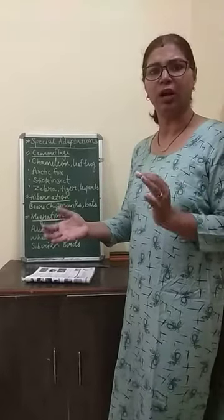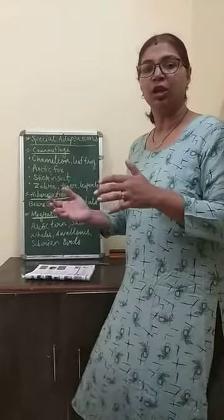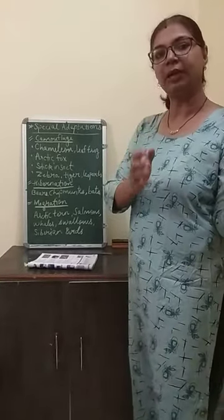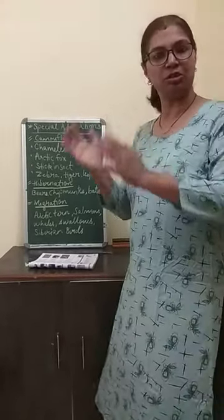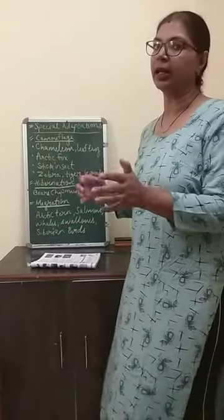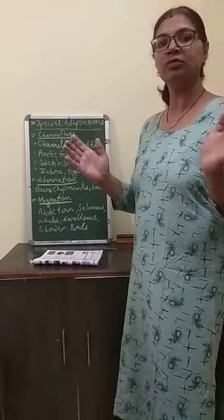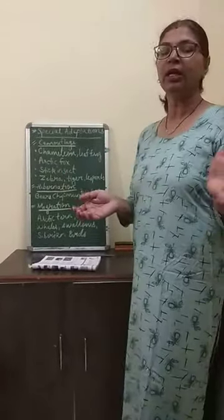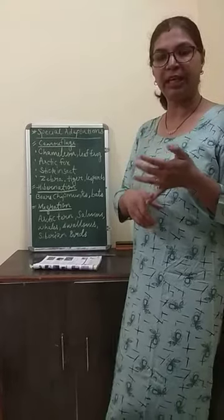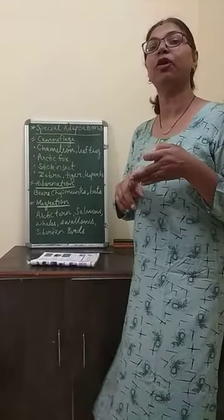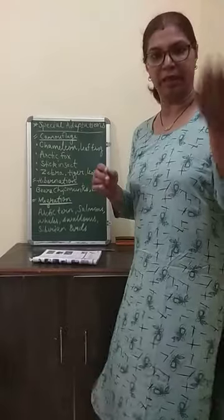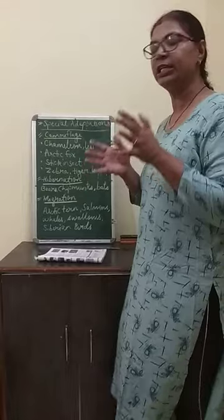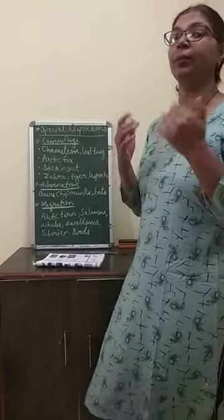Sometimes the weather is too harsh — it's very cold — so they move to a warmer place, and when the climate is good enough for them to survive or becomes a little warmer, they come back. This mass movement of animals from one place to another to escape harsh weather, or for their breeding habits, feeding habits, or even for their protection, is called migration.